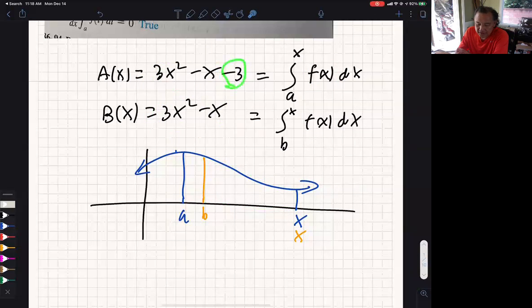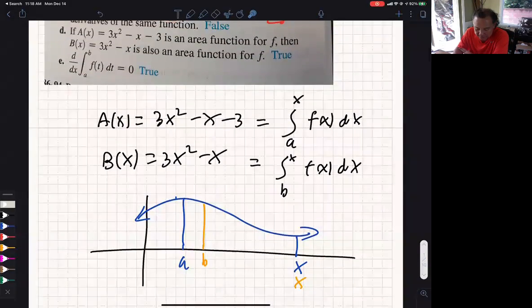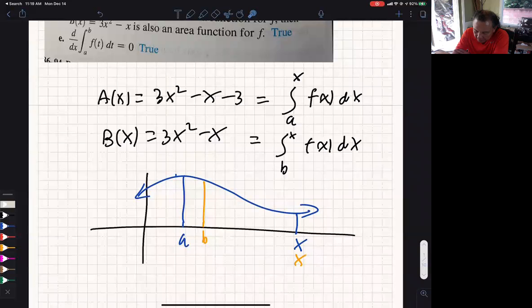The difference, the constants there are different because you could start at different points giving you a little different area differing by a constant. Hopefully that made sense. That's kind of a hard question to kind of get your brain around. But let's look at this last one here.